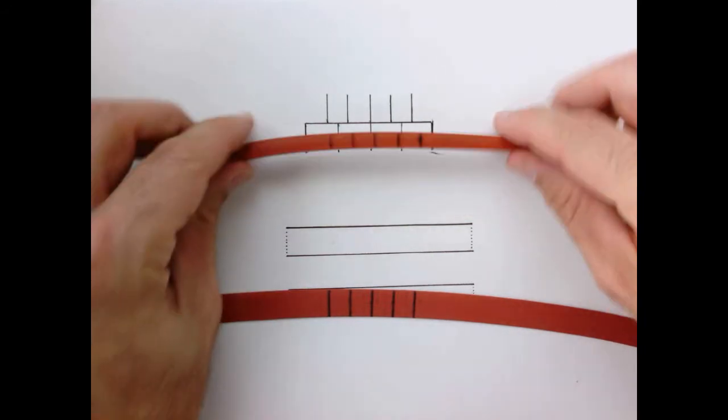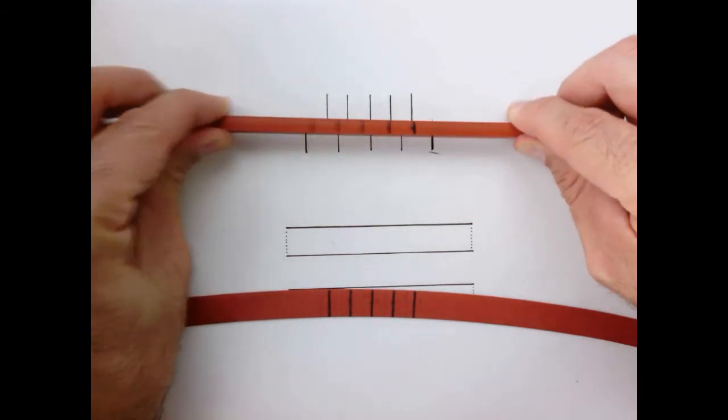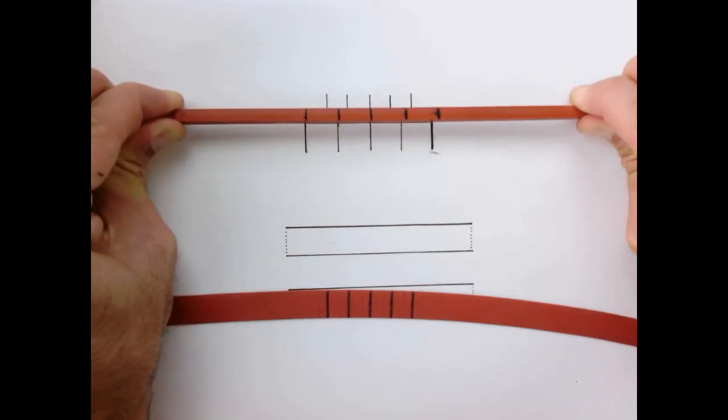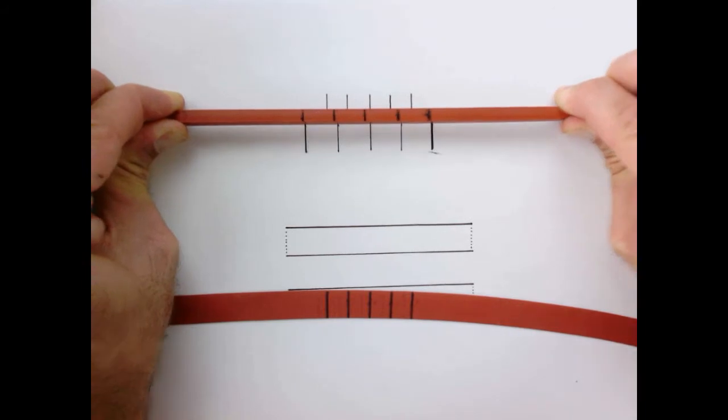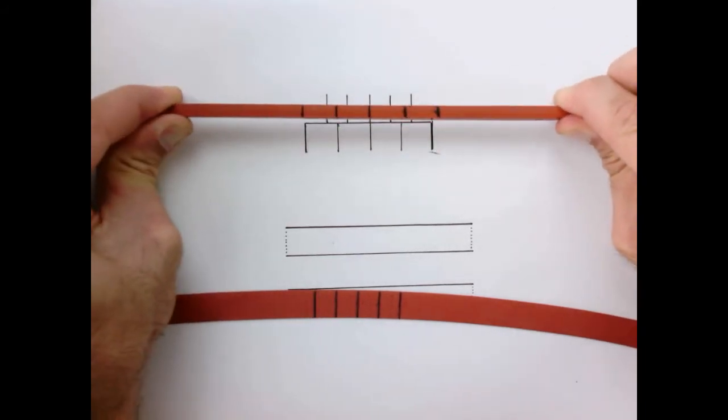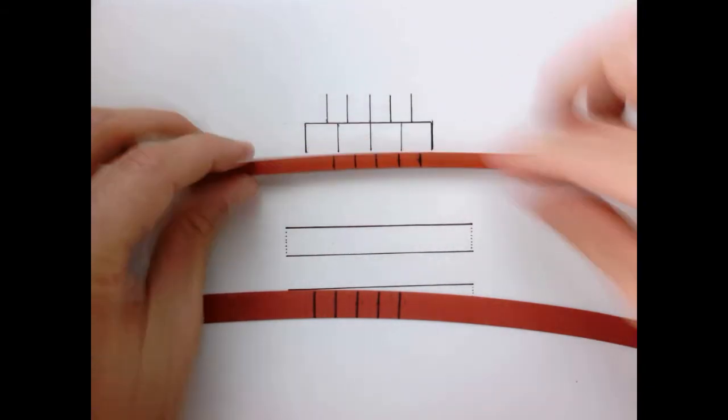Now let's look at the same thing with a thicker bar. Now again we start off with one centimeter spacing. And if I pull really hard I can get the same kind of behavior we saw with the thinner band. So it's the same kind of behavior but the force I'm applying is much greater because this bar has a larger cross-section area.